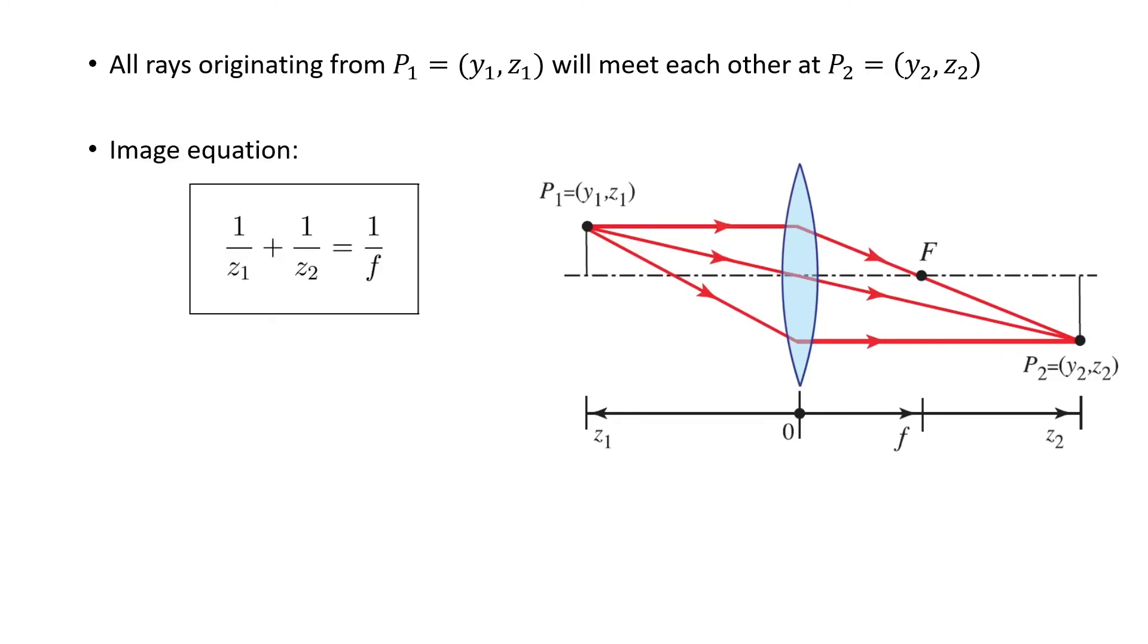Rays originating from P1 meet each other at point P2. The image equation is this: it's very similar to the equation for mirrors. 1 over Z1 plus 1 over Z2 is 1 over F. And the magnification is given by Y2 is minus Z2 over Z1 times Y1.